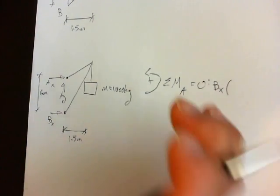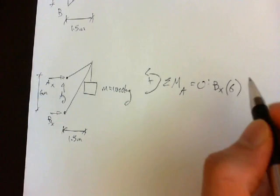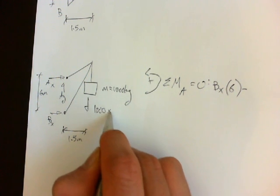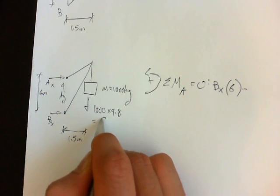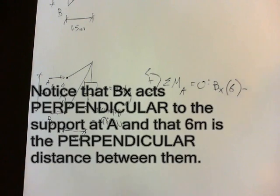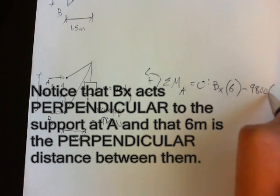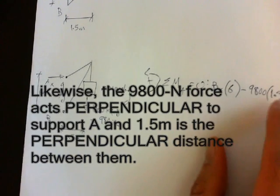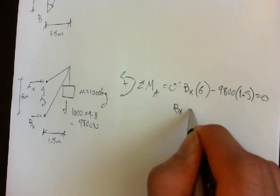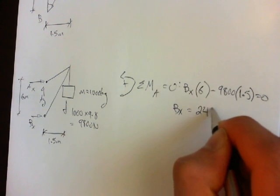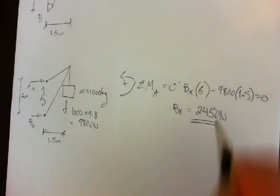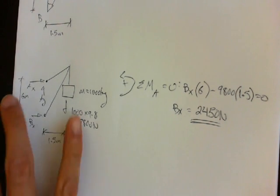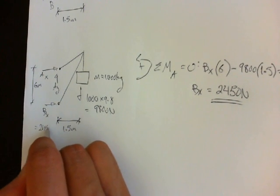BX times 6 minus this force is equal to 1,000 kilograms times 9.8 equals 9,800 newtons. Minus 9,800 times 1.5 equals zero. So BX equals 2,450 newtons.